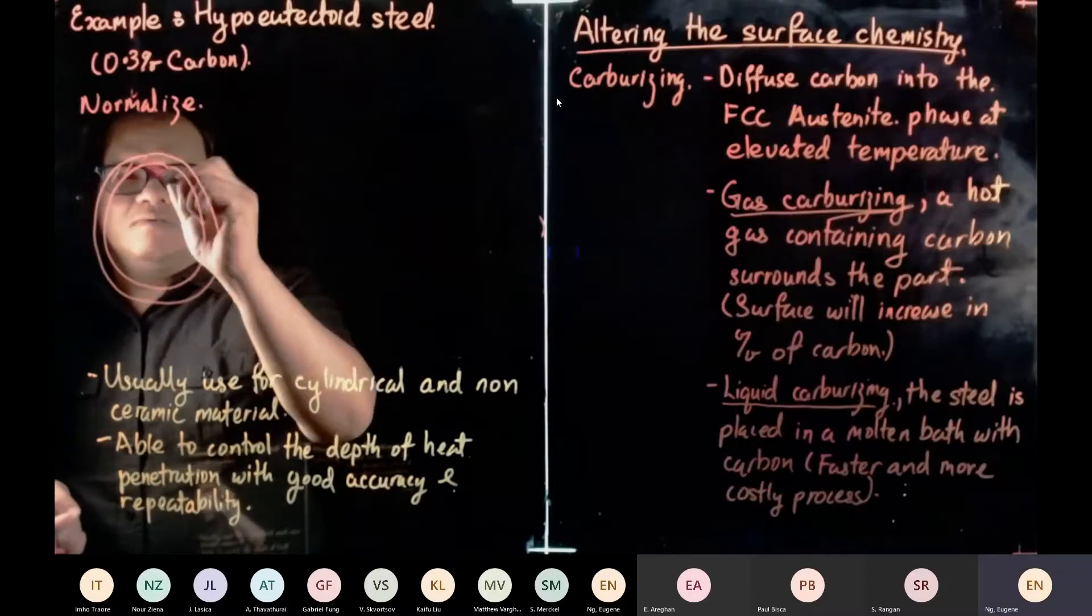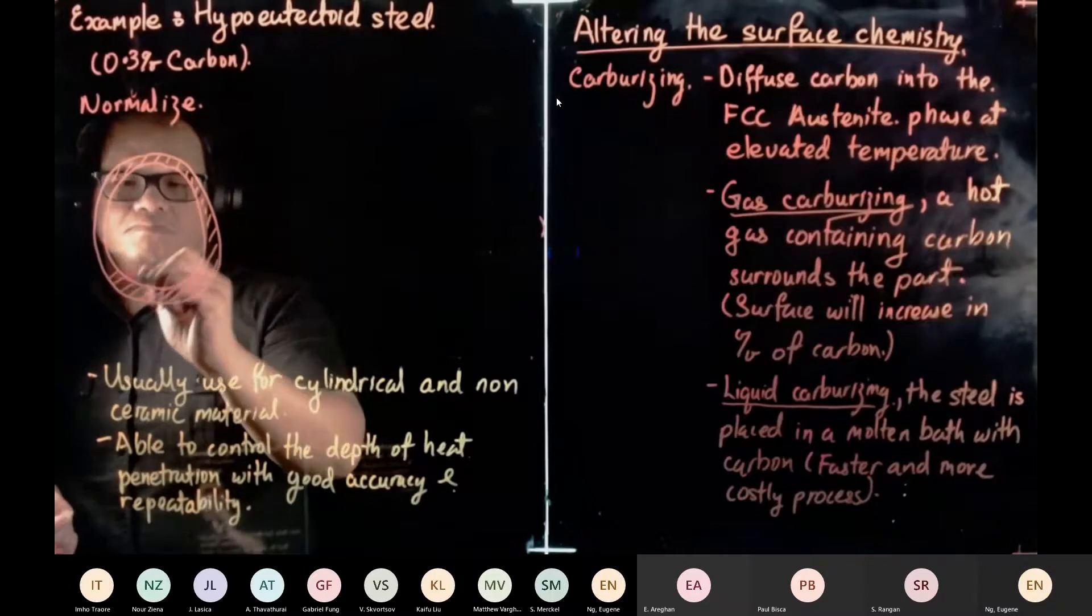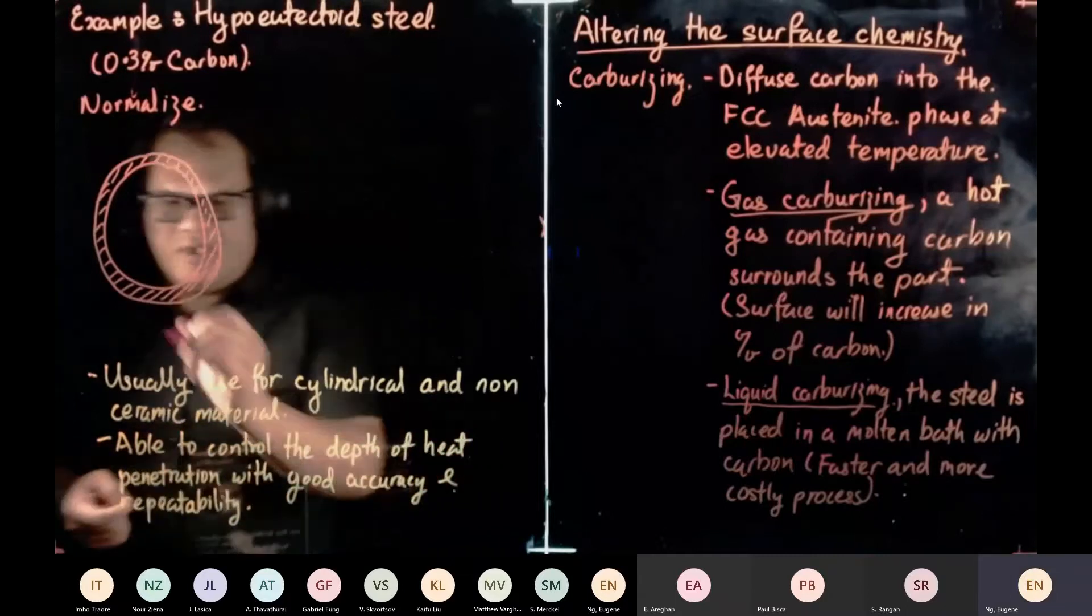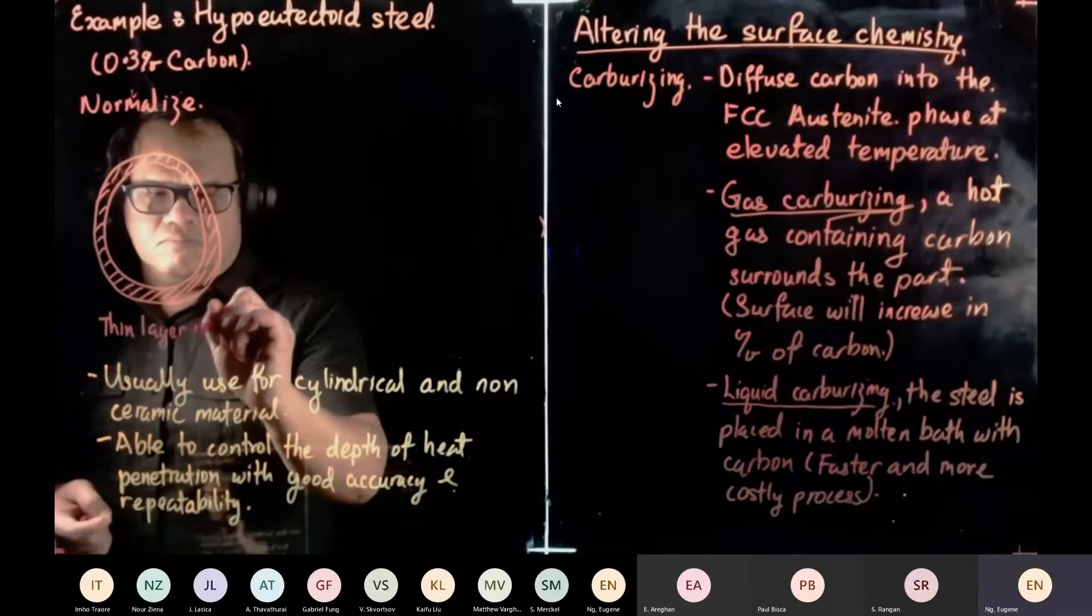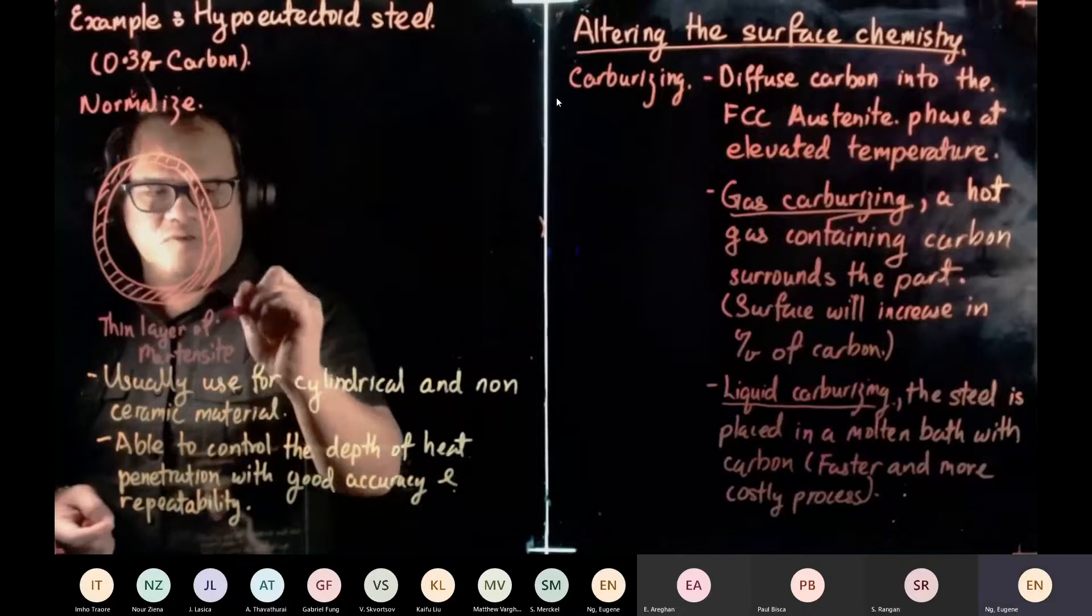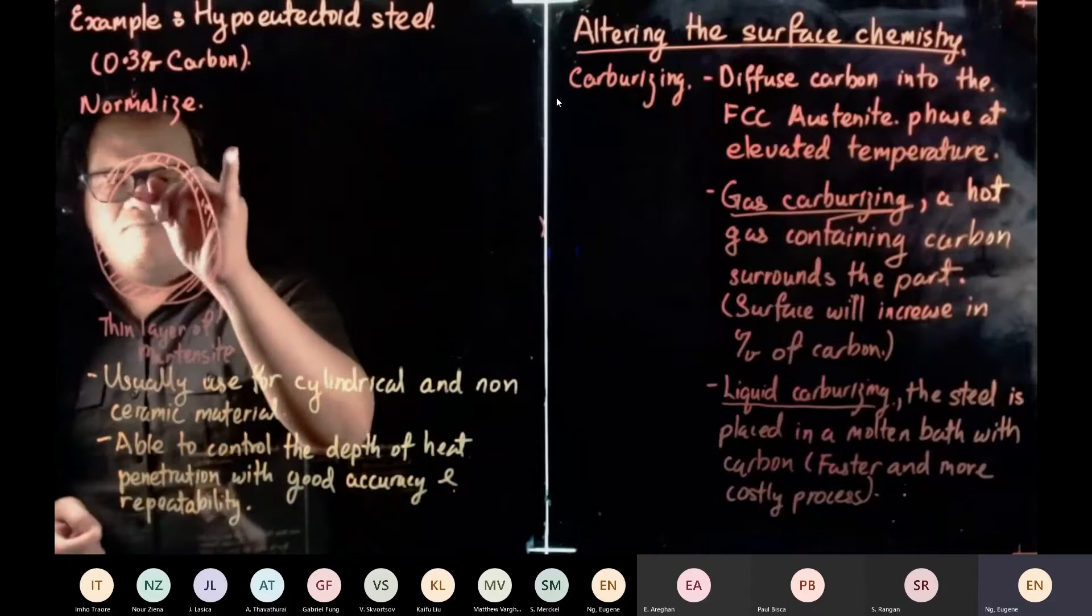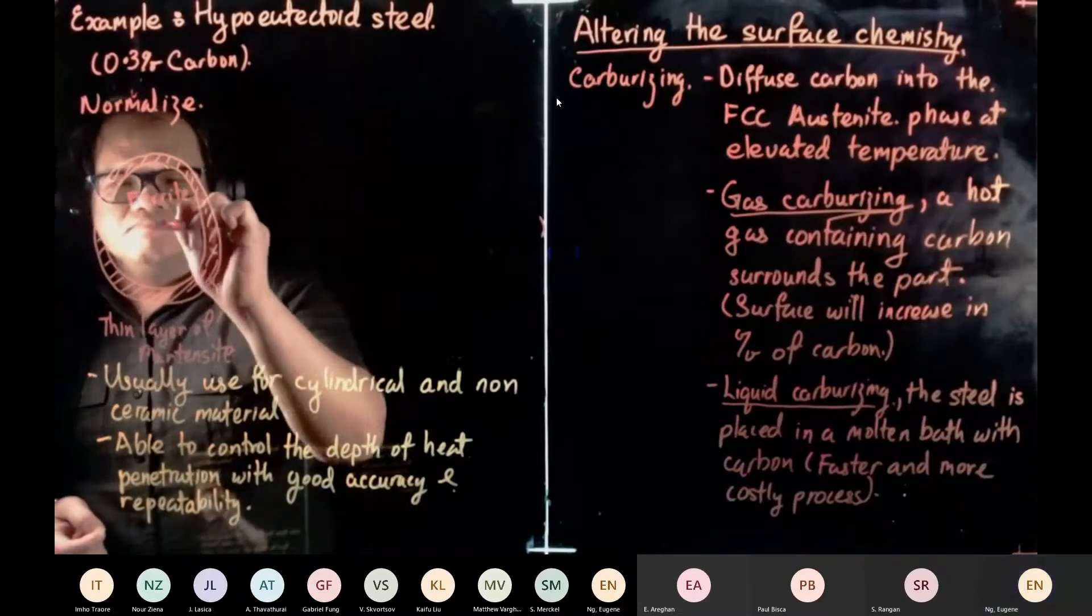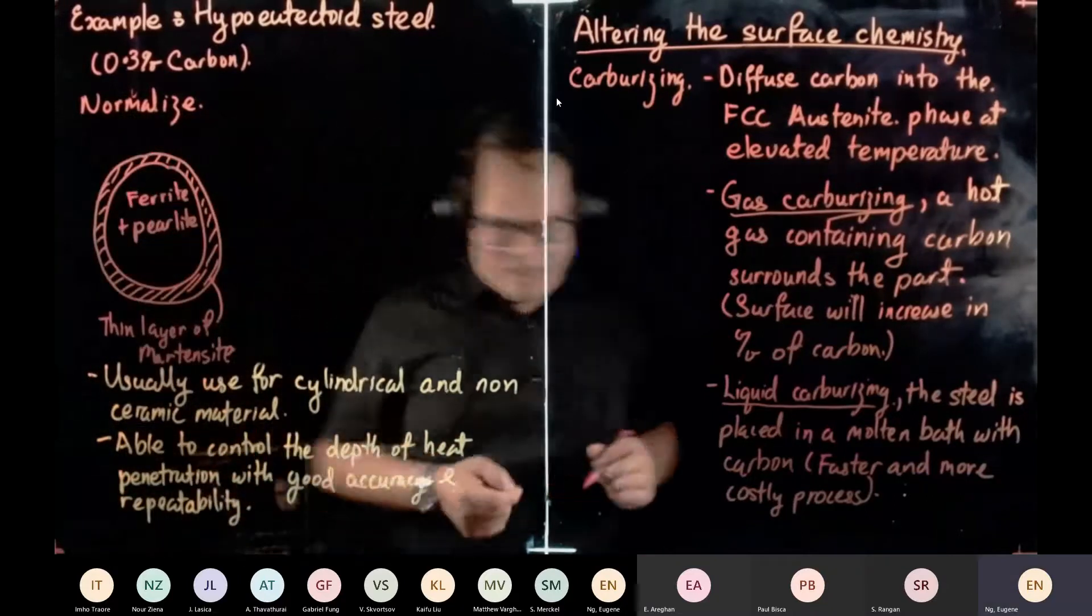So what we have over here, when we normalize, is we will get a thin layer of martensite. And then our core, we will get ferrite plus pearlite. So this is what we do by normalizing.